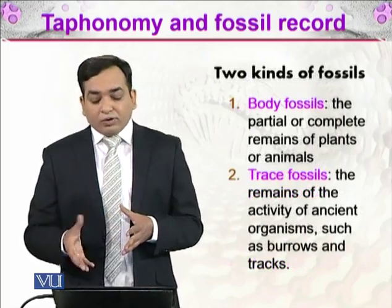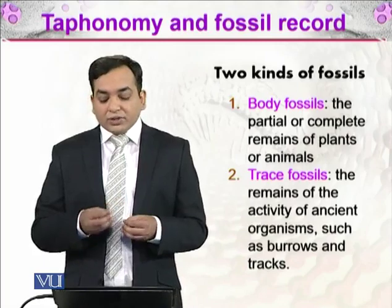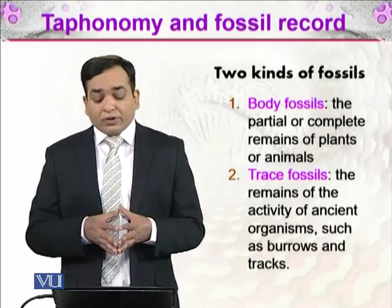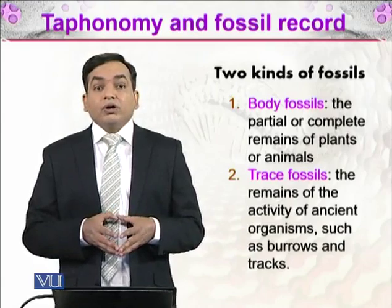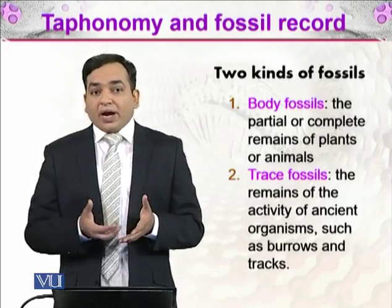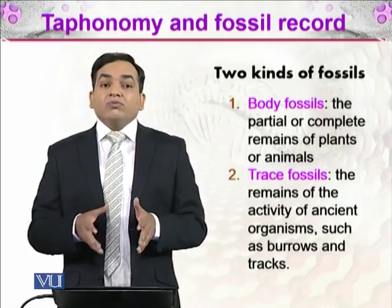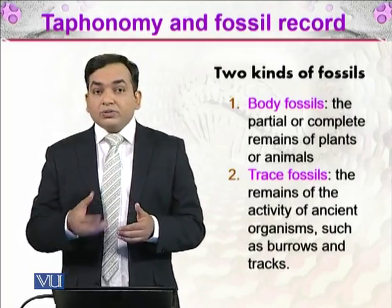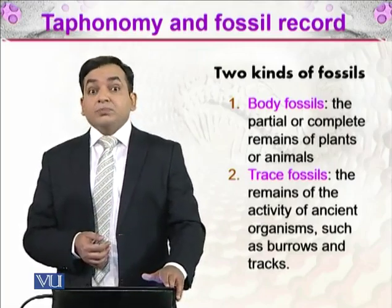There are two kinds of fossils. First, there are body fossils — the partial or complete remains of plants and animals. Then there are trace fossils, which are the remains of the activity of ancient organisms, such as burrows and tracks. Trace fossils might include feces as well — for example, bats in a cave excreting feces that accumulate on the cave floor and transform into a complete fossil. And of course there are footprints, such as the footprints of dinosaurs that have been found.